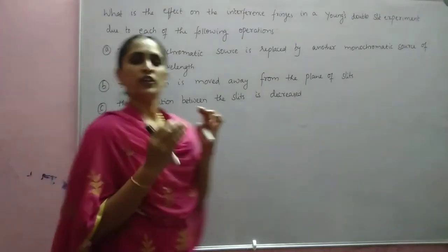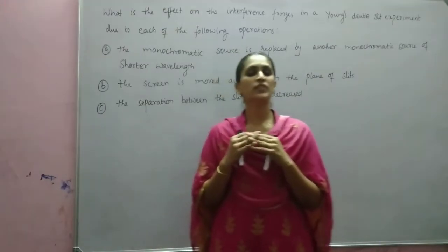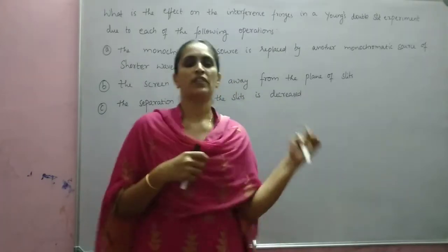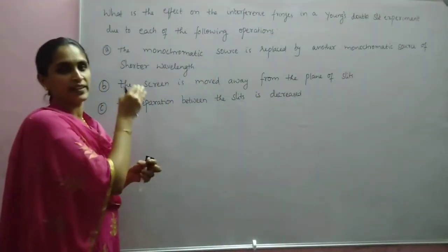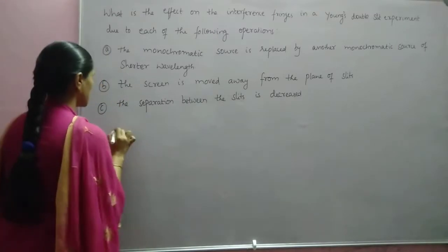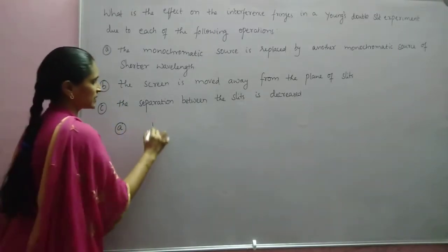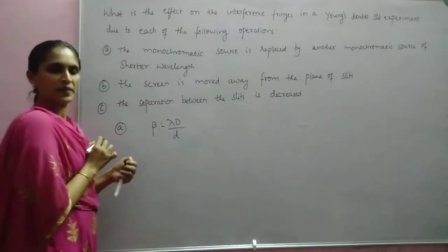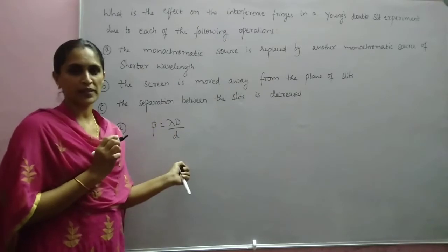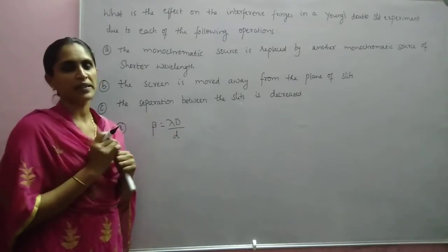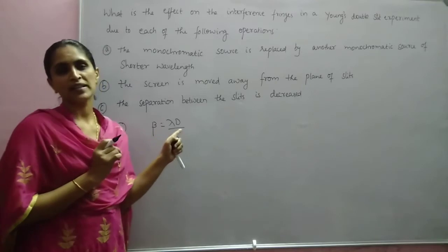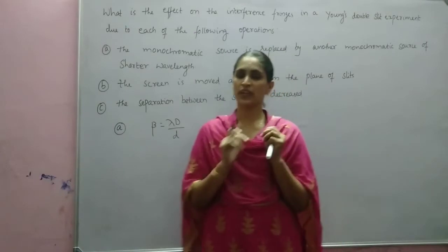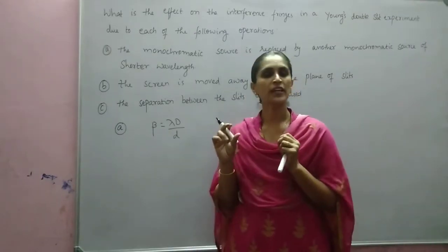First of all, we can write the expression for fringe width and check whether any relation exists. The expression for fringe width is given by beta equal to lambda into capital D by small d, where beta is the fringe width, lambda is the wavelength, capital D is the distance between the slits and the screen, and small d is the distance between the two slits.